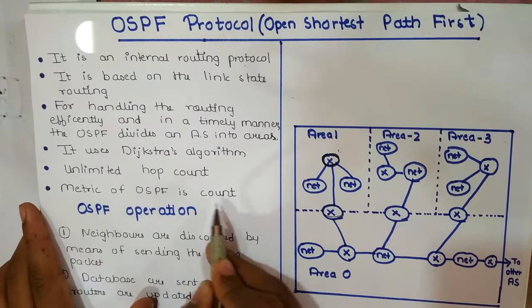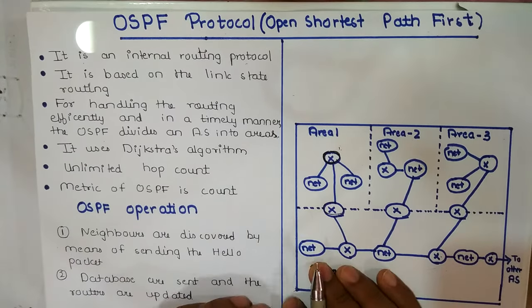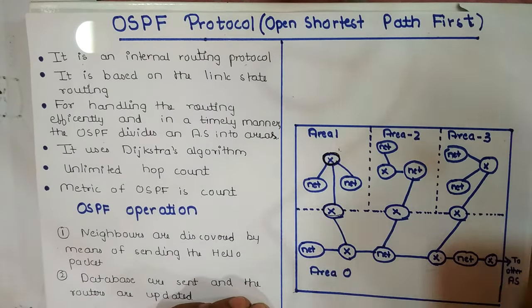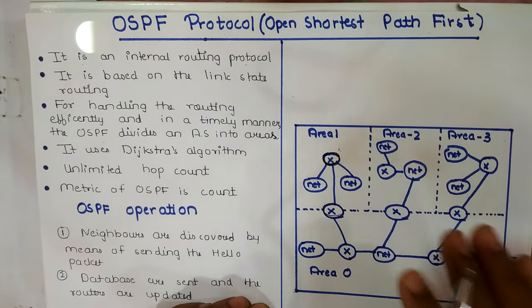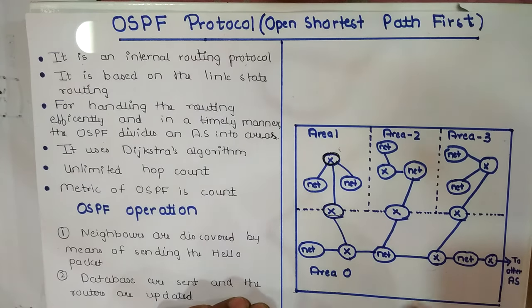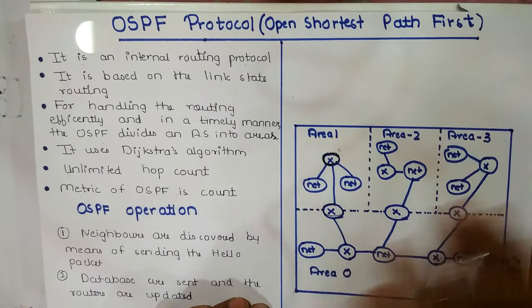The metric of OSPF is cost. Every router has a cost associated with it — the cost may represent distance. Using this cost, OSPF applies Dijkstra's algorithm to find the shortest path.